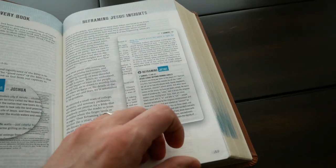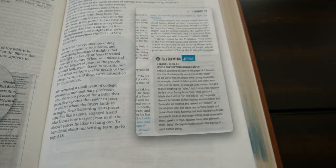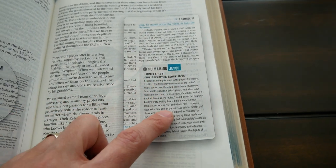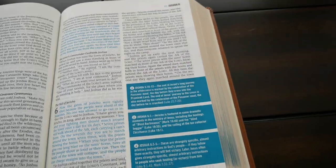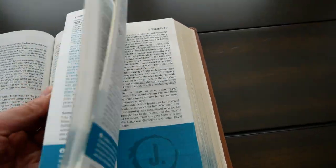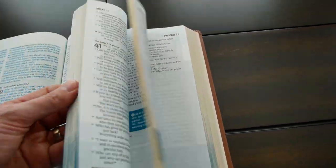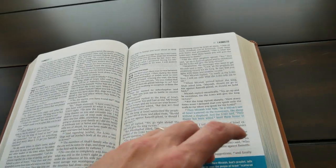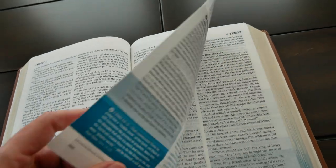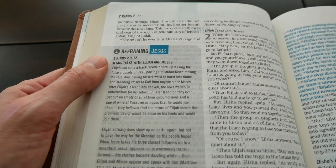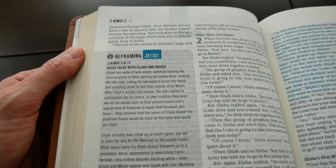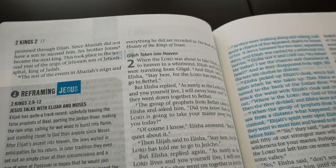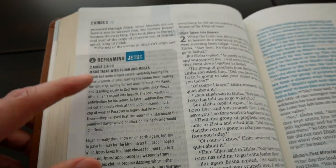Then you continue and you have reframing Jesus insights. And these are little in-text boxes in gray. They call it reframing Jesus. And basically what they do is that they give you the context for the passage that you are reading and how that passage relates to Christ. And you understand that better because of the context and some theological key points that they bring out. So, like here in 2 Kings 2, Jesus talks with Elijah and Moses.